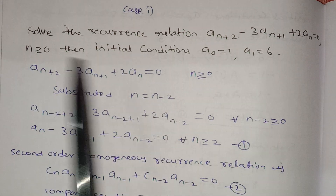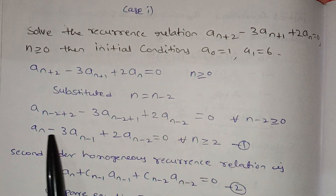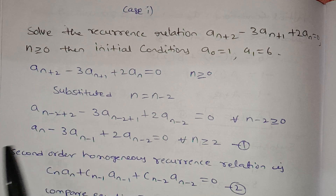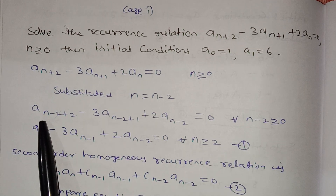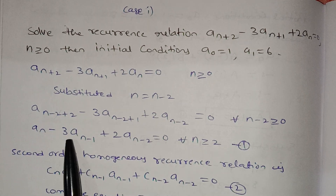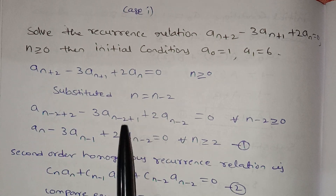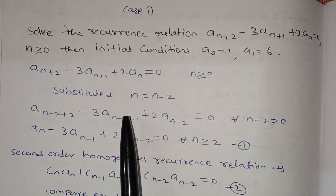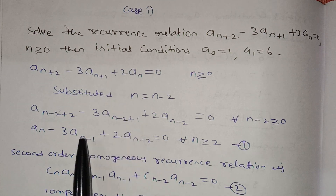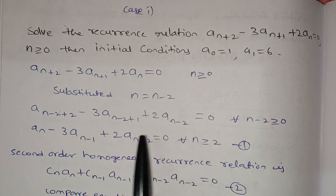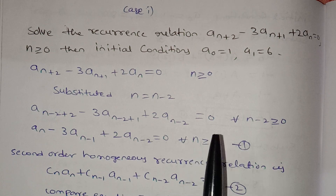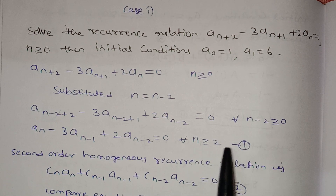When n-2 equals to 0, the minus 2 plus 2 cancels. We get a(n) minus 3a(n-1) plus 2a(n-2) equals to 0, for all n greater than or equal to 2. We call this equation 1.